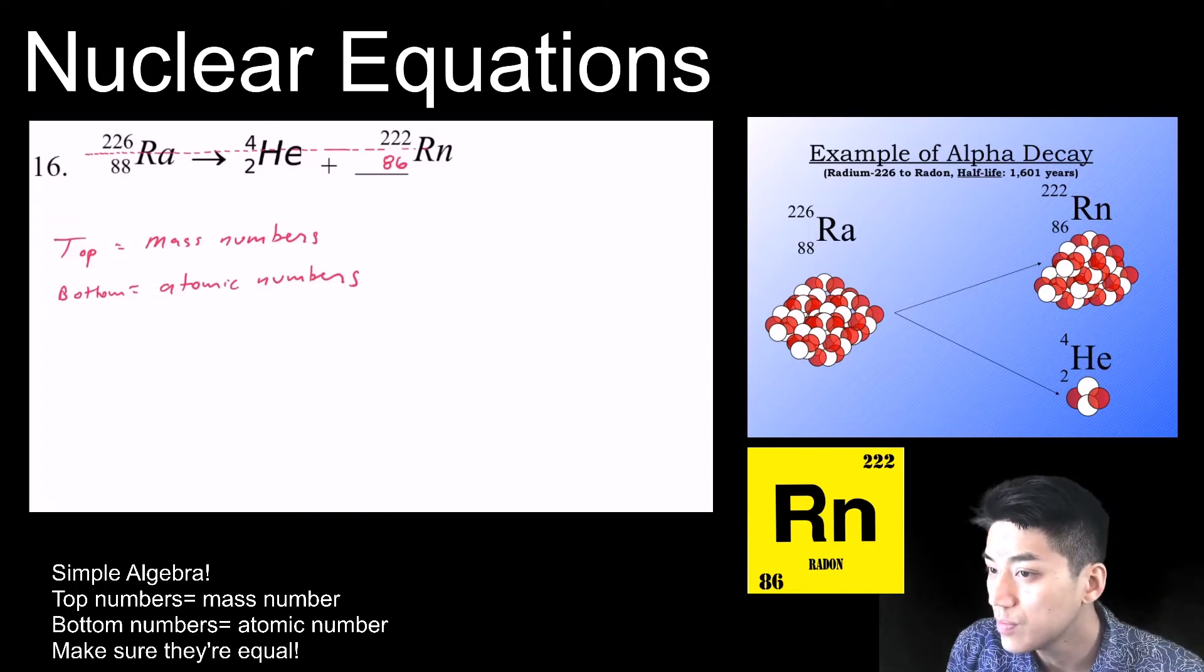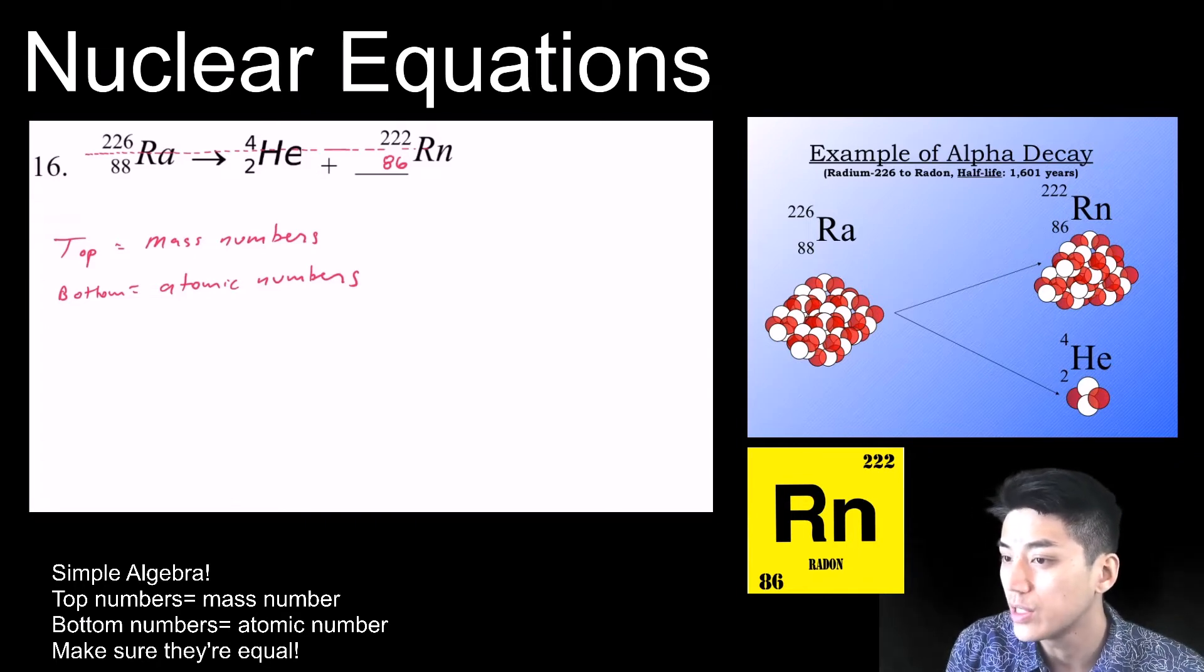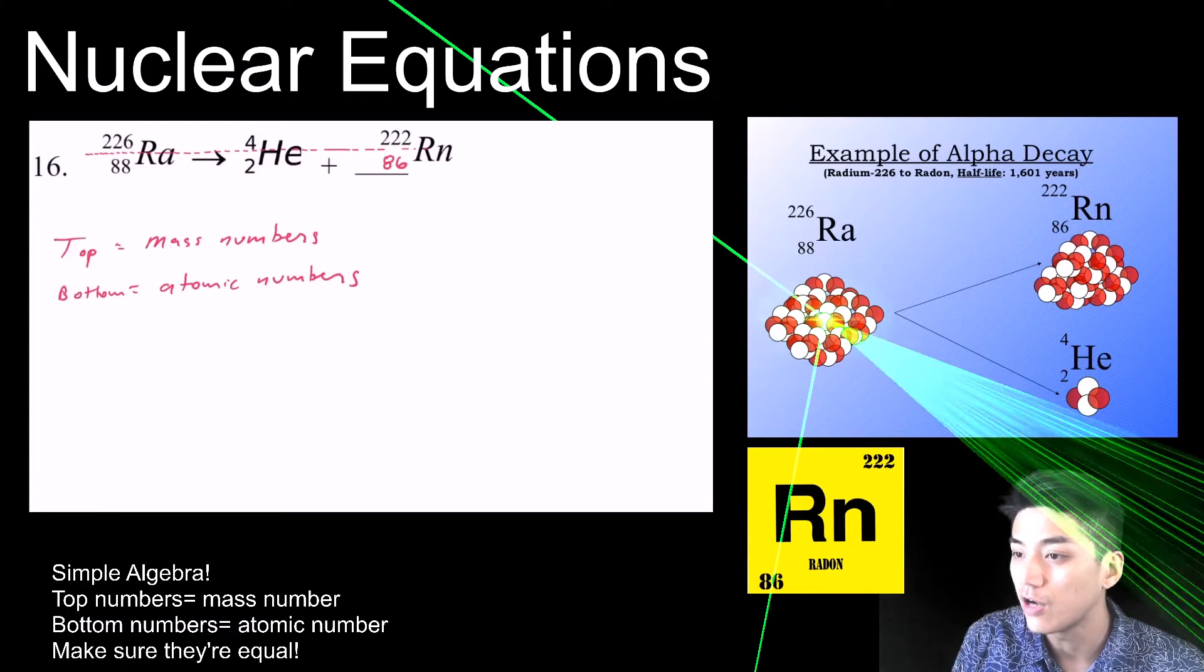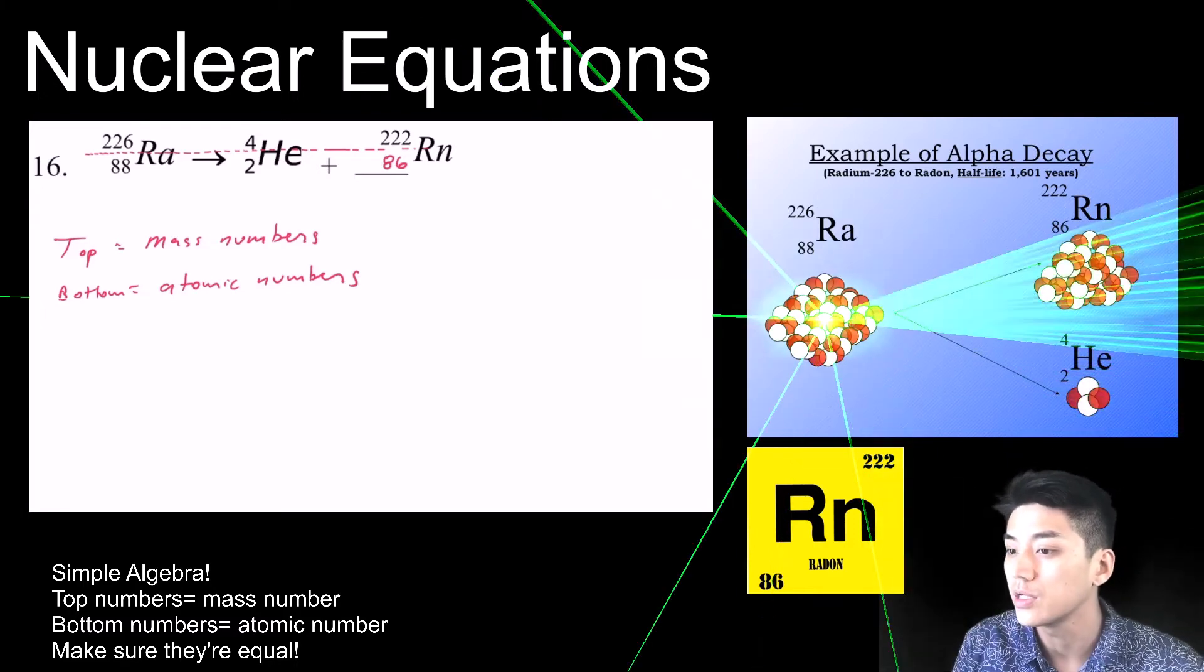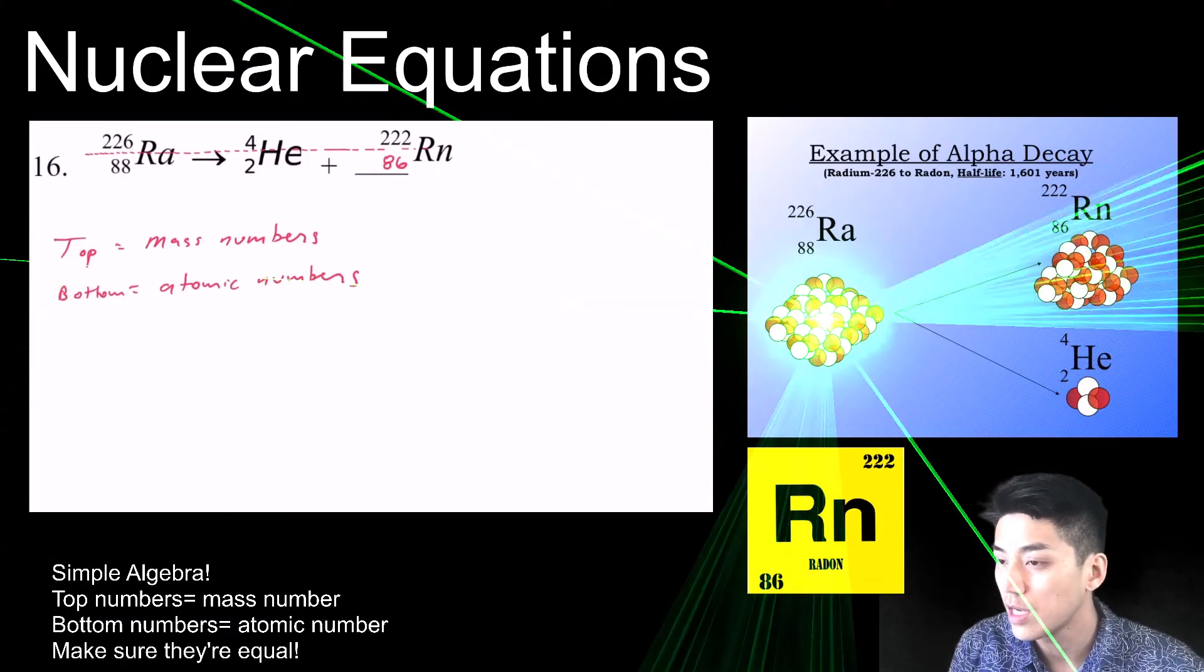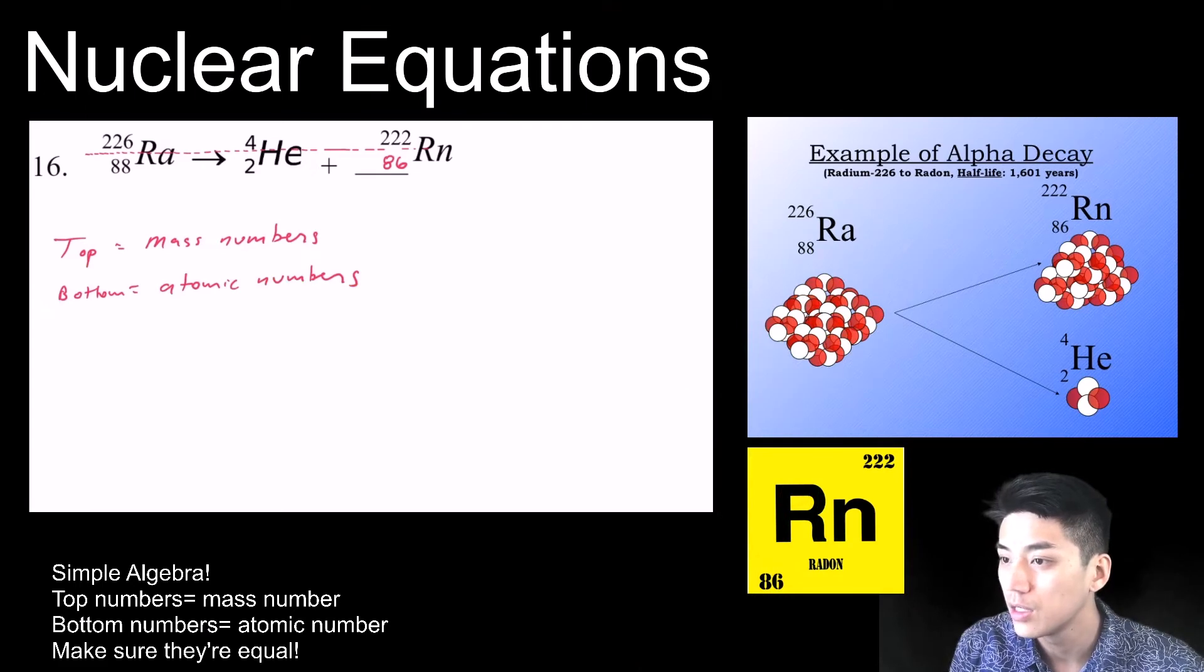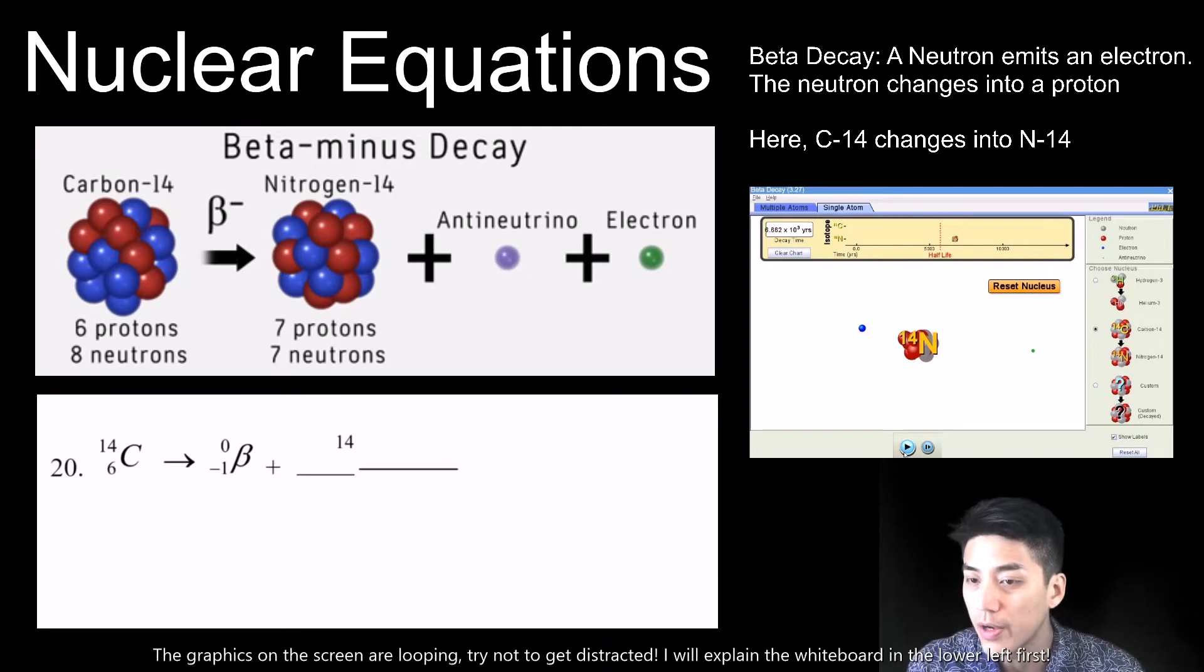So radium with the mass of 226 will shoot off an alpha particle, and in the process of doing so, it creates a stable element, which is radon 222.